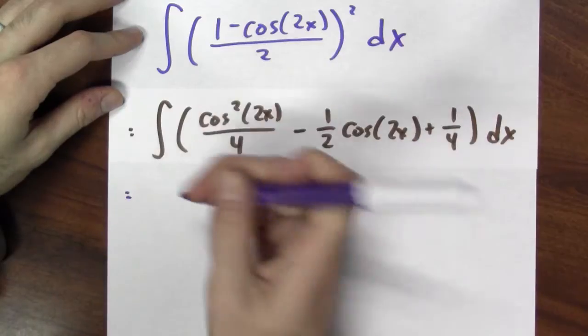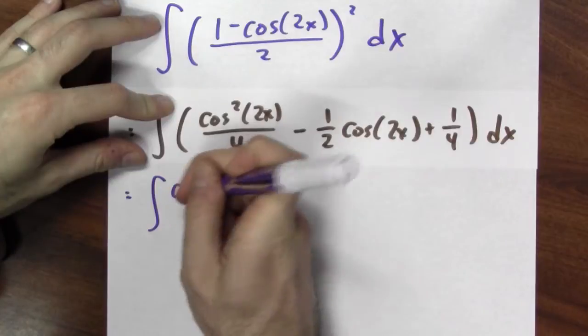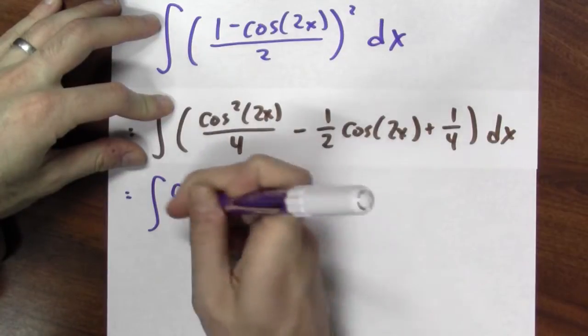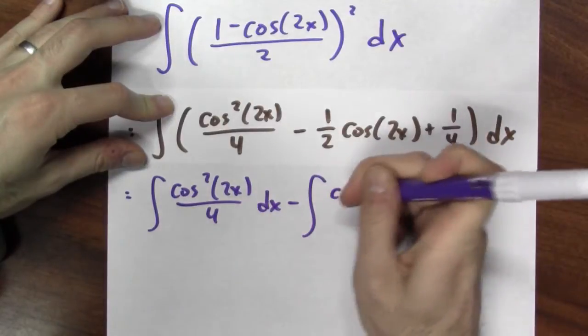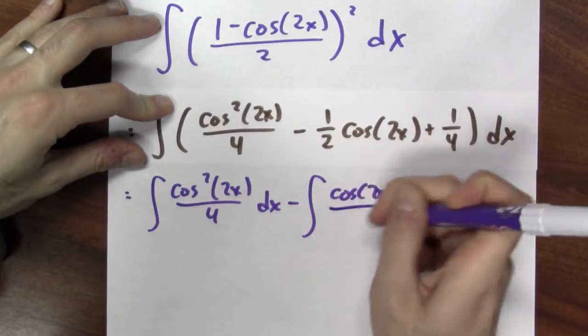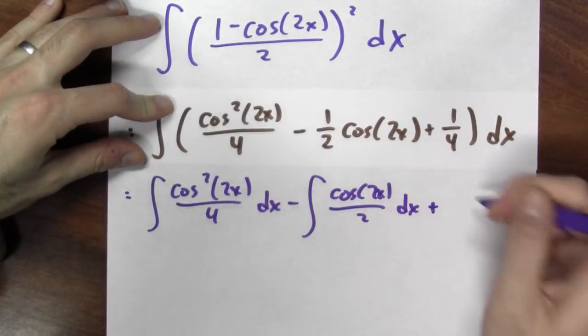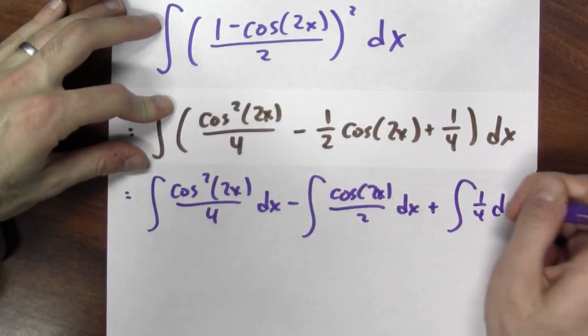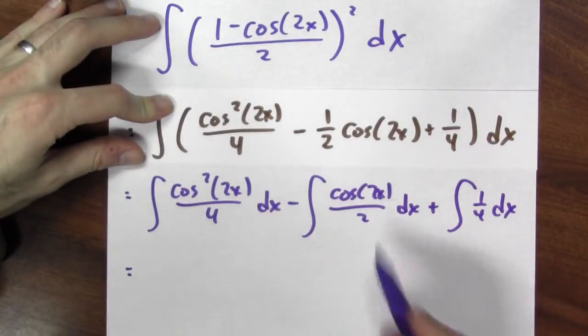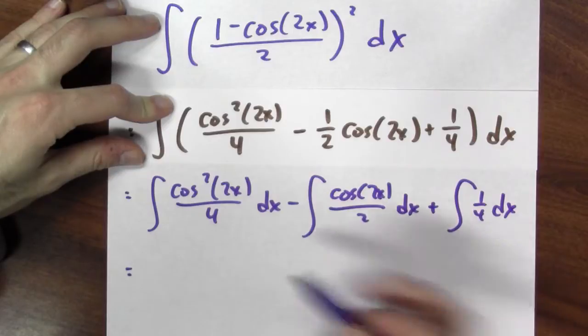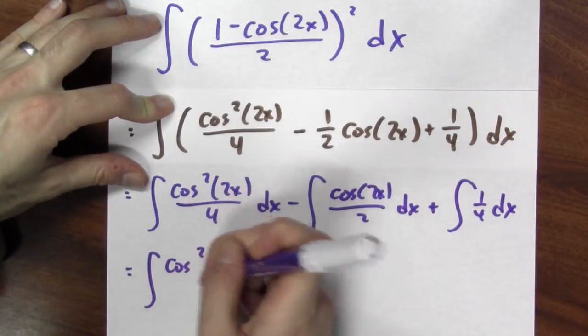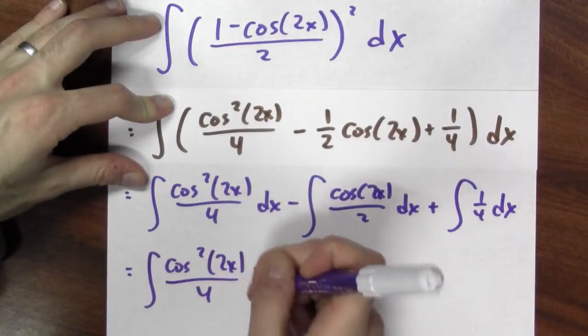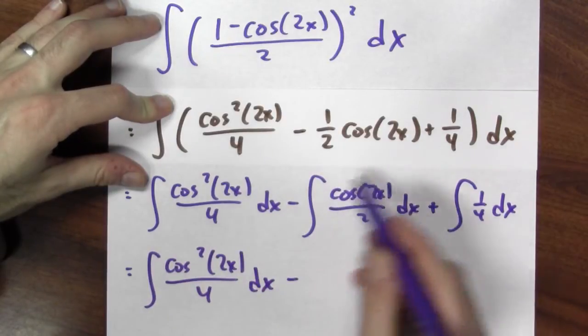So I just have to do this integration problem. I can split that into three integrals. So this gives me the integral of cosine squared 2x over 4 dx minus the integral of cosine 2x over 2 dx plus the integral of 1 fourth dx. Now the second and third integration problem I can do, I'm just going to copy down this one again.